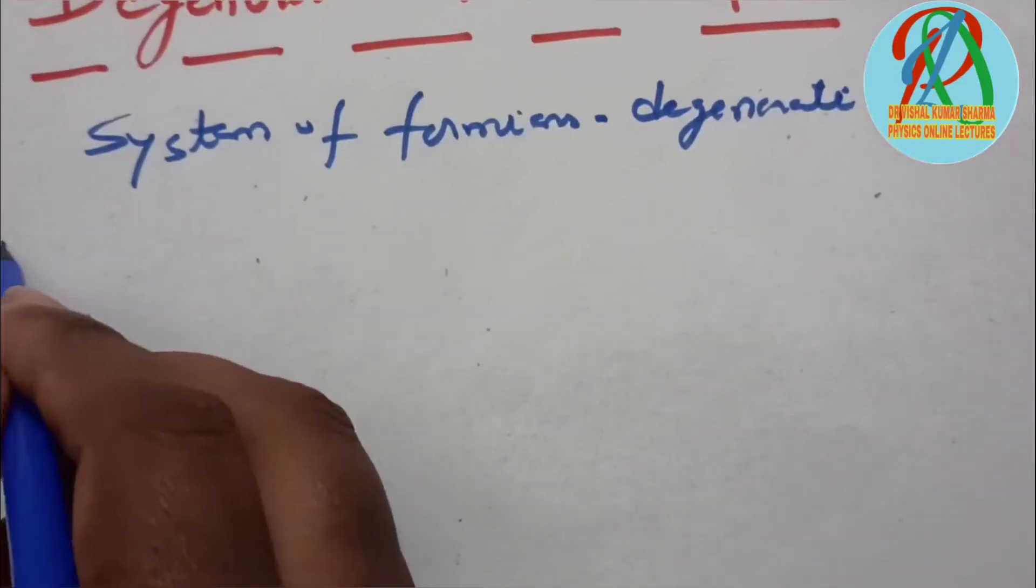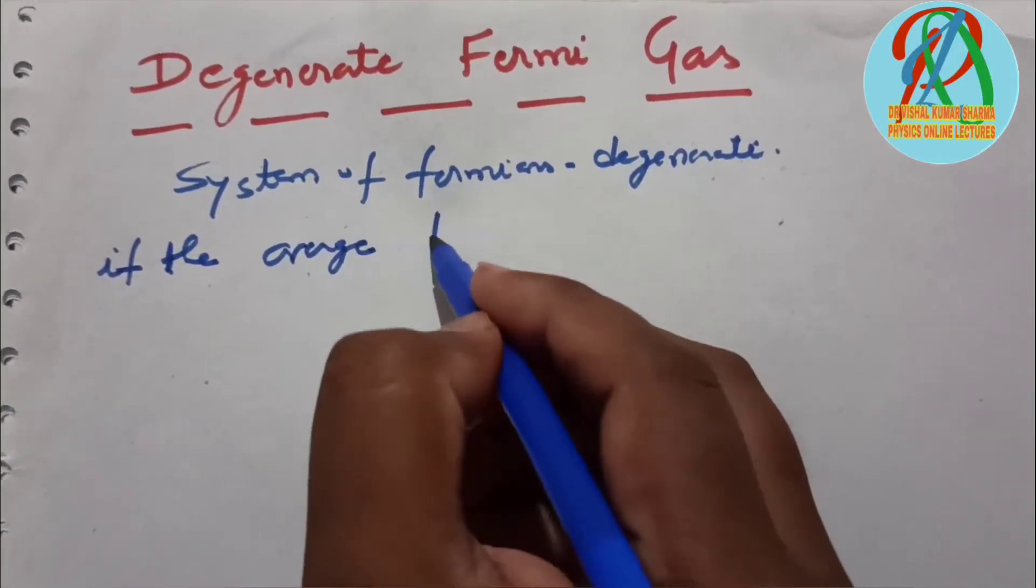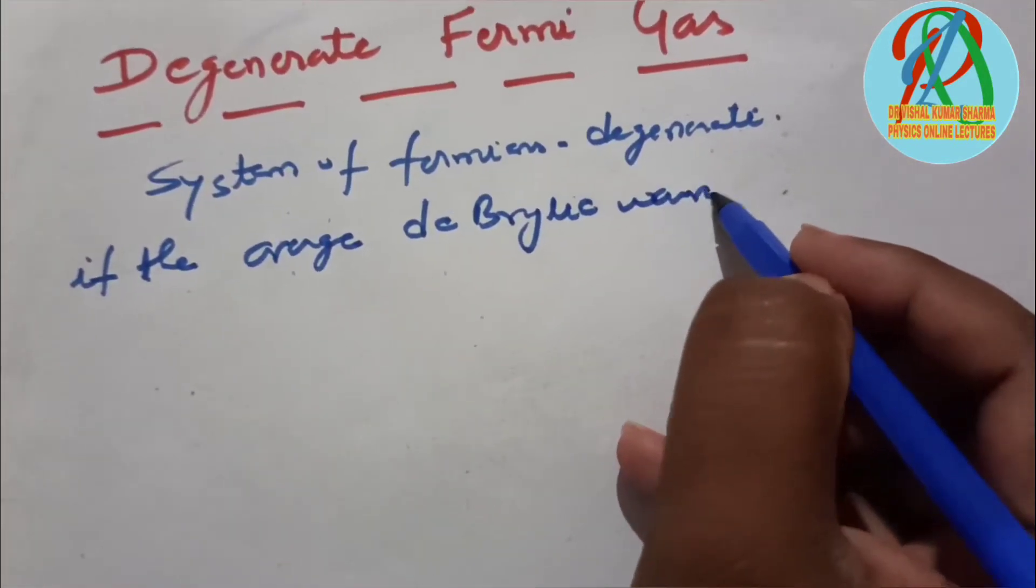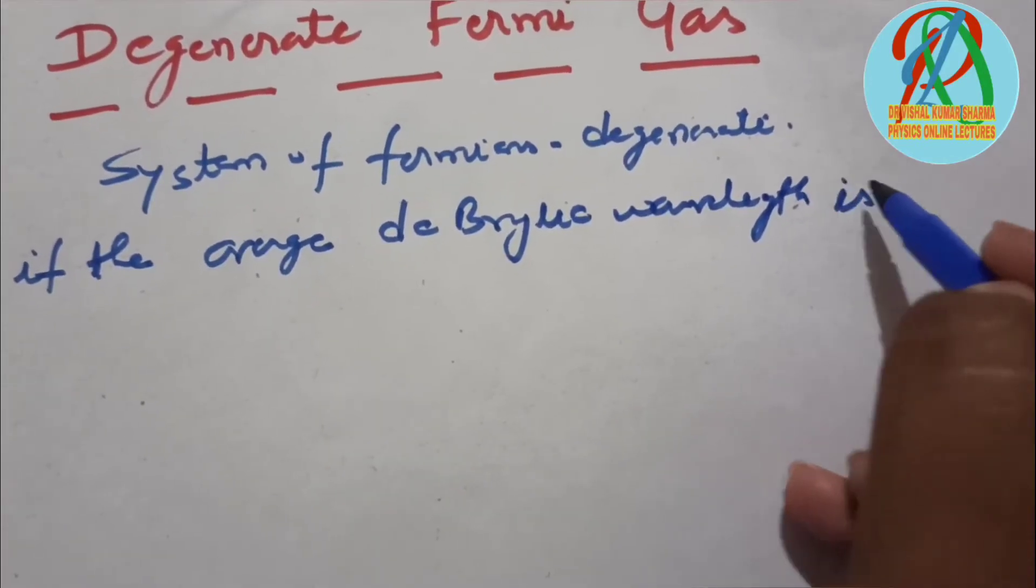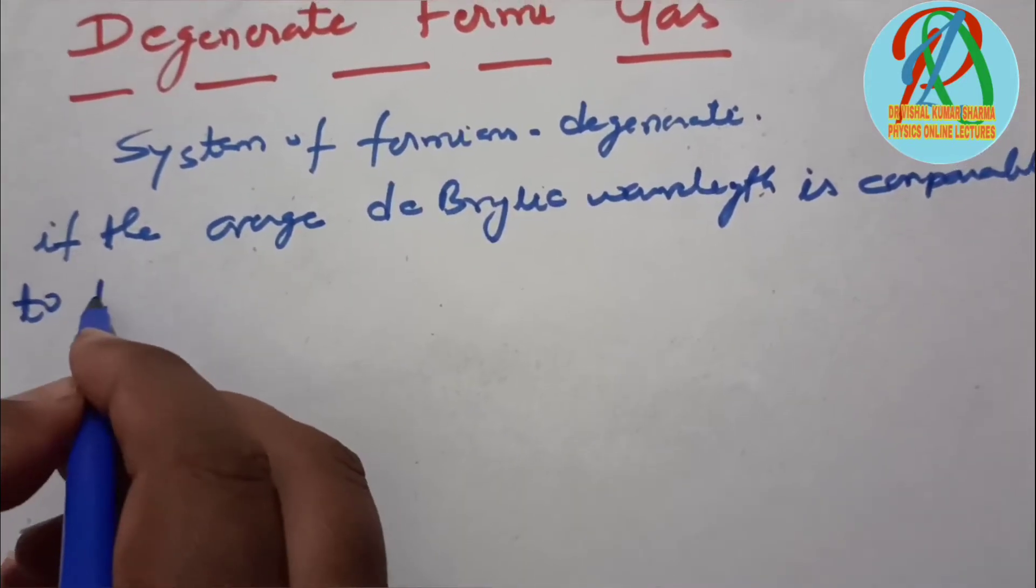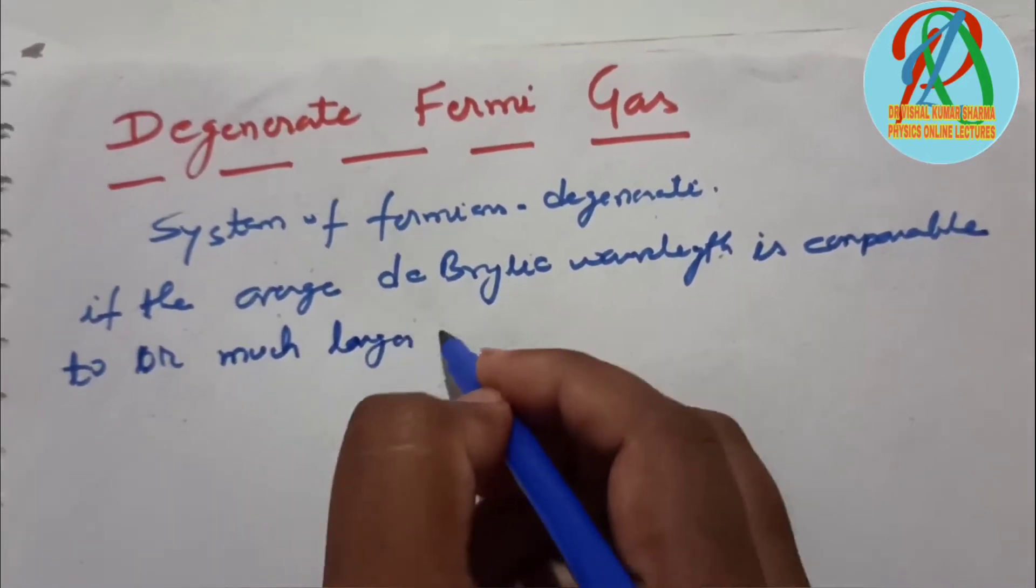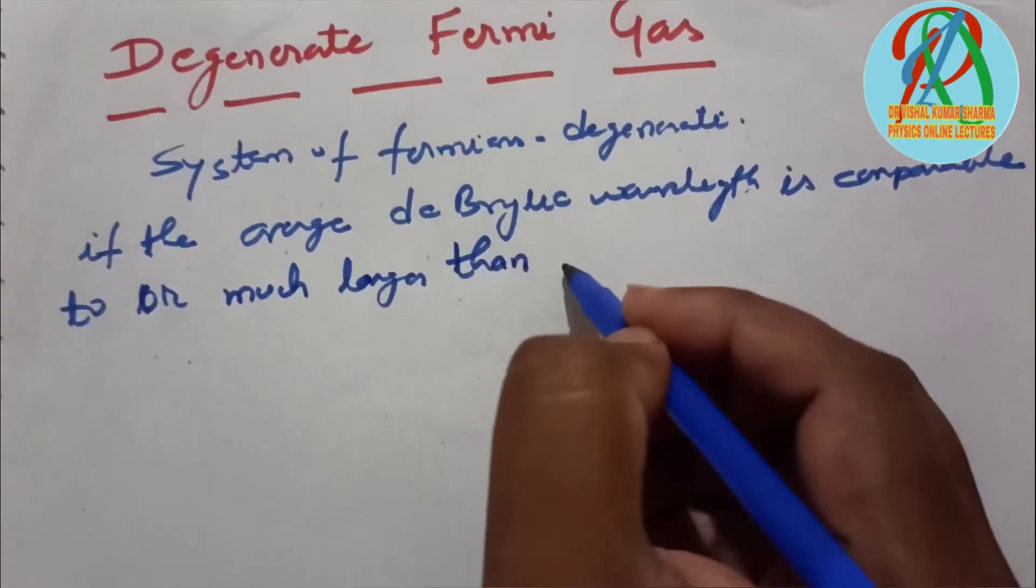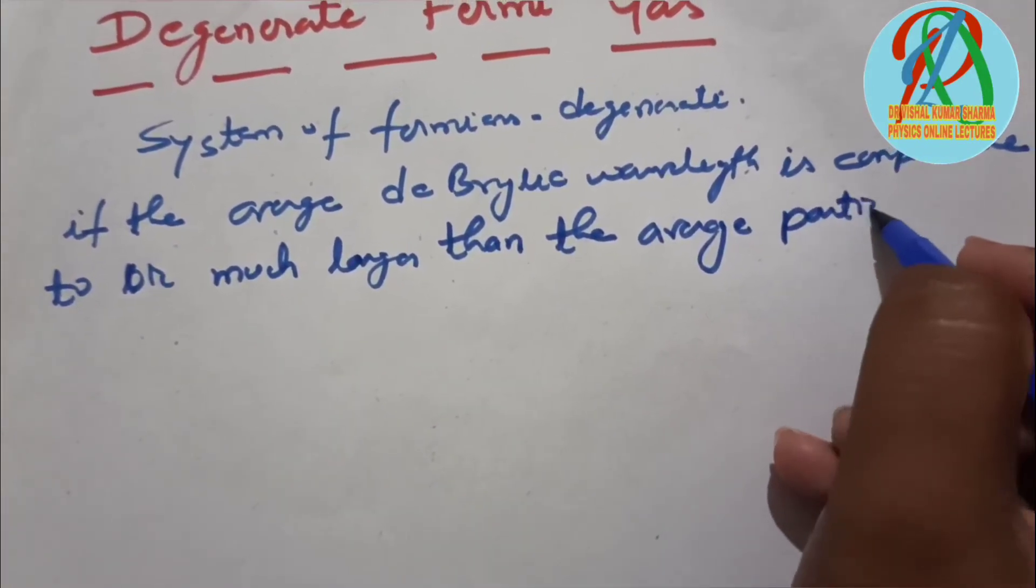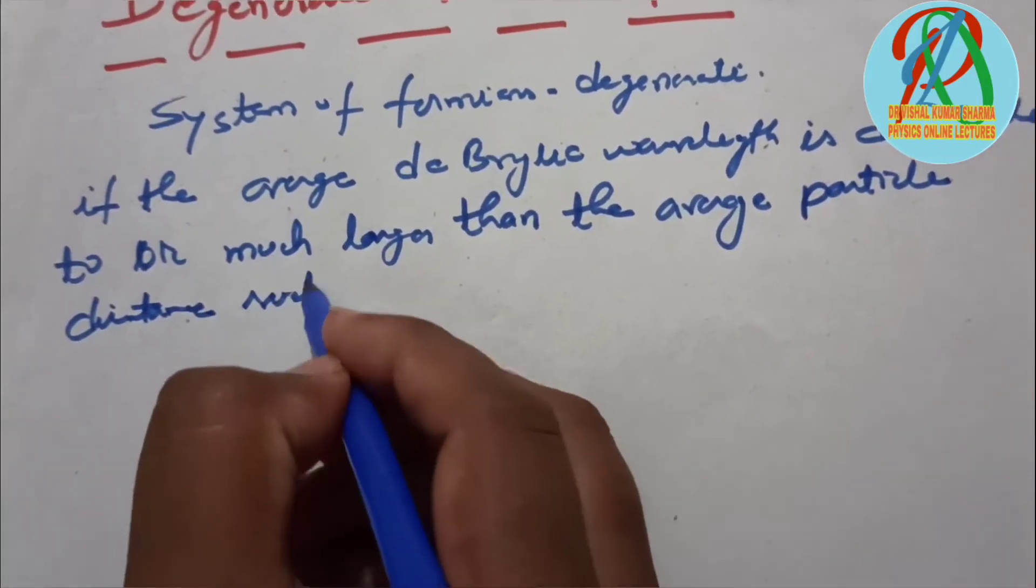If the average de Broglie wavelength is comparable to or much larger than the average particle distance, such that their wave functions overlap and this overlap cannot be ignored, the system can no longer be treated classically.